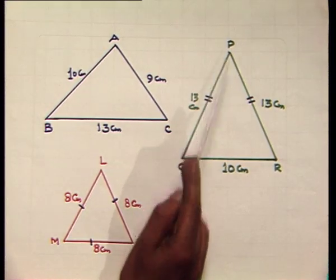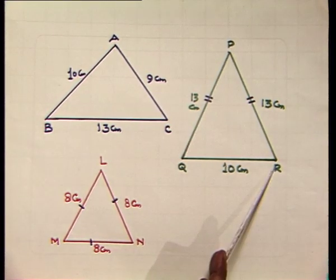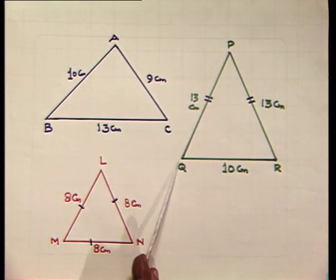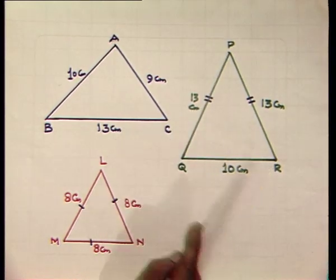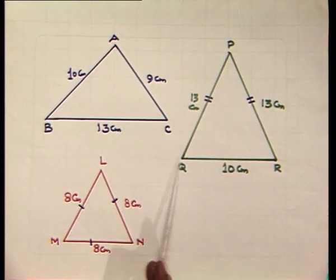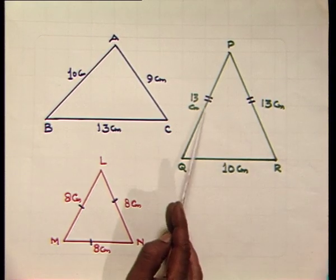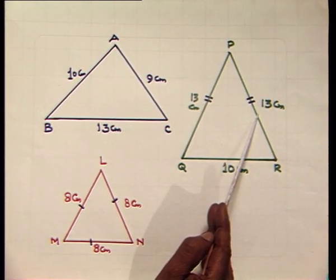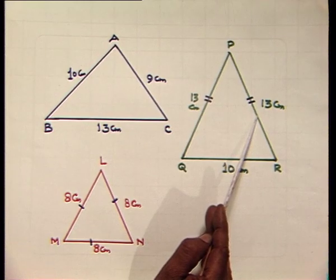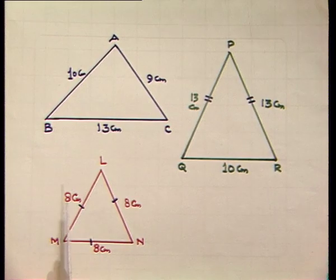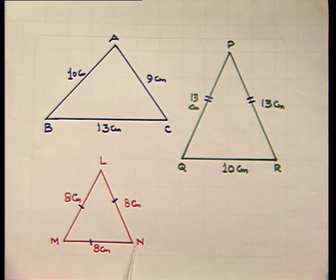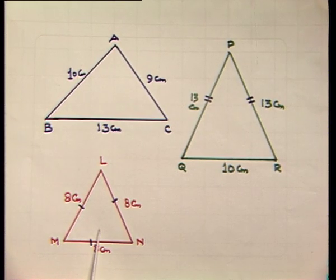In triangle PQR, we have side PQ equal to side PR, each is 13 centimeters, and QR is 10 centimeters — that is, these two sides are equal in length. Such a triangle we call an isosceles triangle. But if all the sides of a triangle are of equal length, like in triangle LMN where each side is 8 centimeters, such a triangle is called an equilateral triangle.